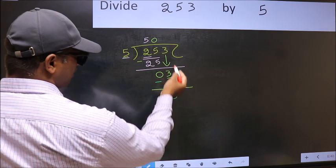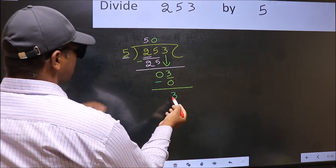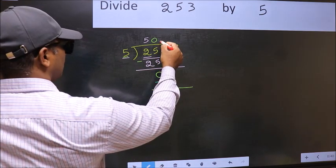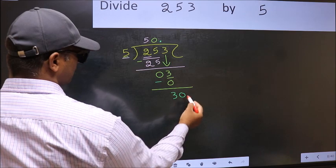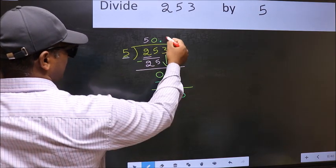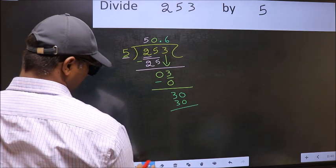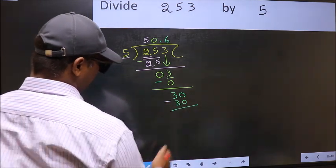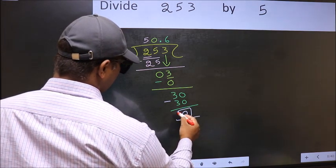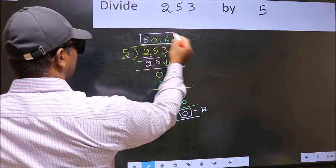Over here we did not bring any number down and 3 is smaller than 5. So now put decimal and bring down 0. So 30. When do we get 30 in 5 table? 5, 6, 30. Now you should subtract 30 minus 30, 0. So this is our remainder and this is our quotient.